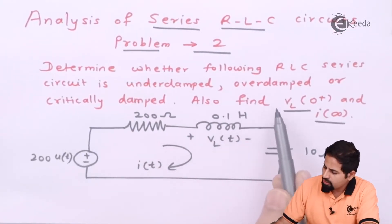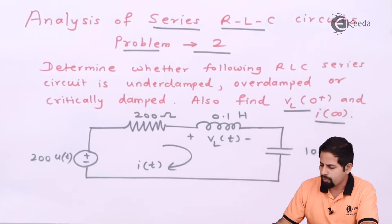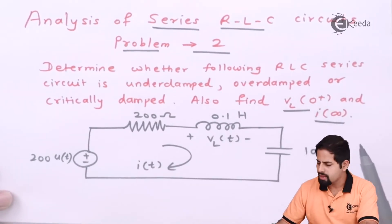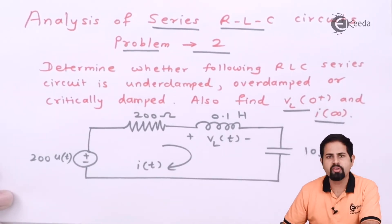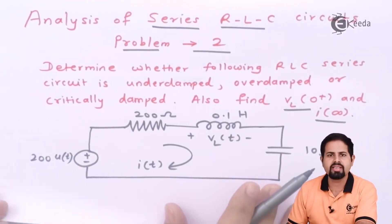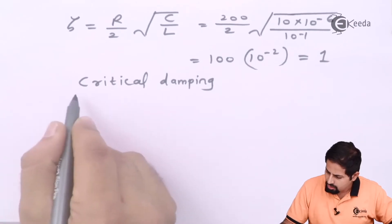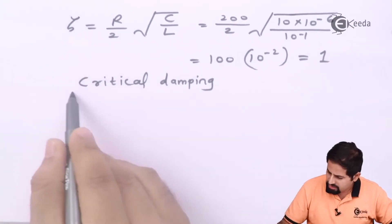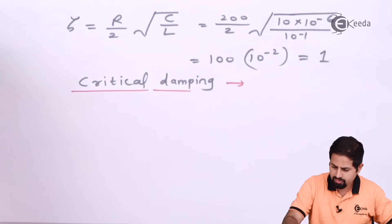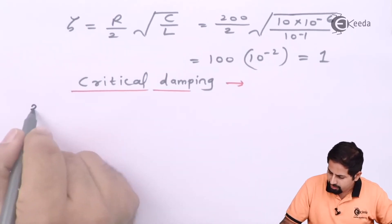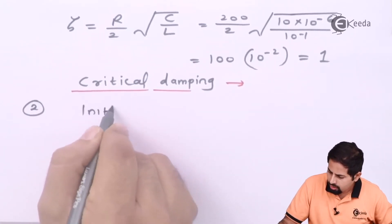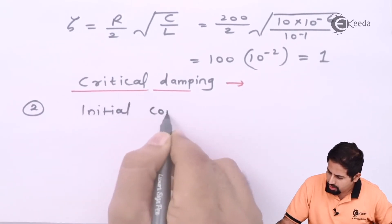So the first answer is that the circuit is critically damped. Now they are also saying: find VL of 0-plus. So now we will find VL of 0-plus, and for that we need to write the initial conditions. First we will write what are the conditions at t = 0-minus.